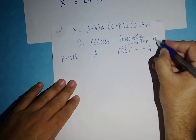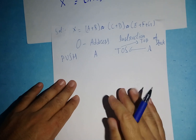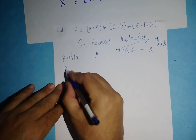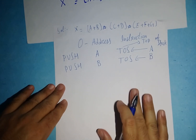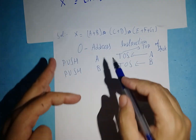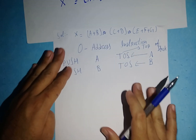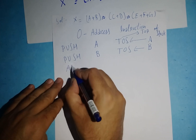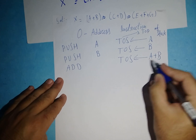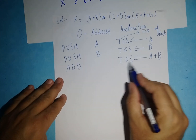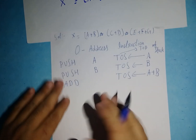TOS represents 'top of stack.' I've pushed A, so the value of A is on top of stack. Now I will push B — top of stack now holds the value of B. In this bracket, A is going to be added with B, so I'll write the operation ADD. Now top of stack holds the value of A + B.